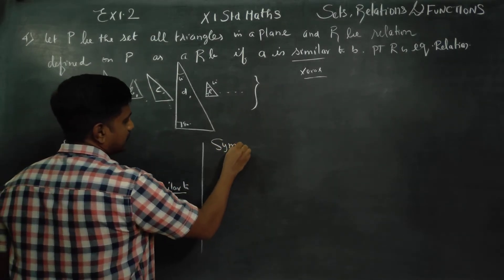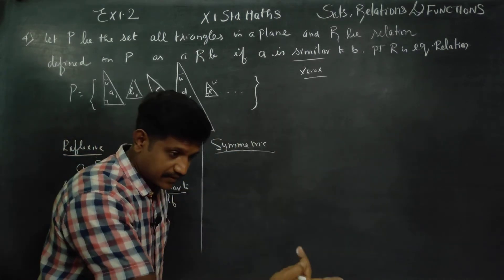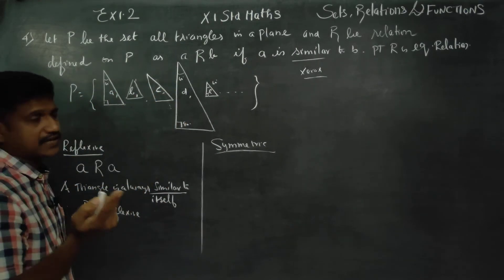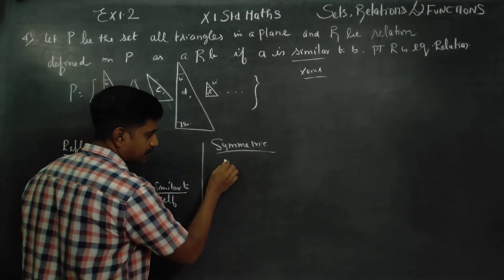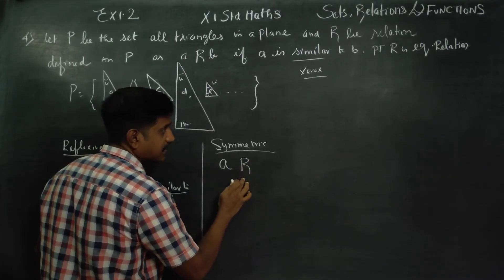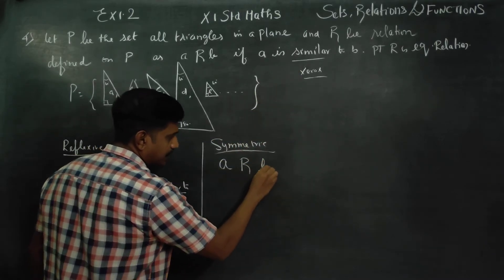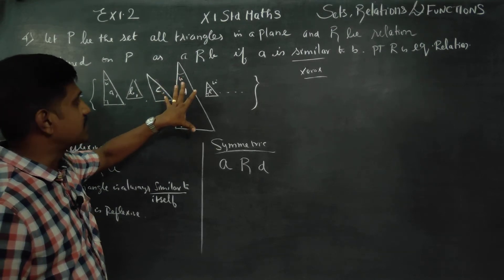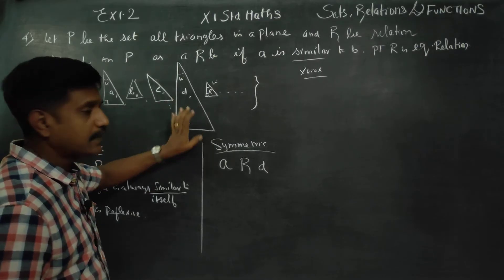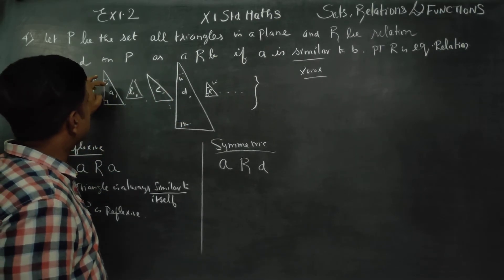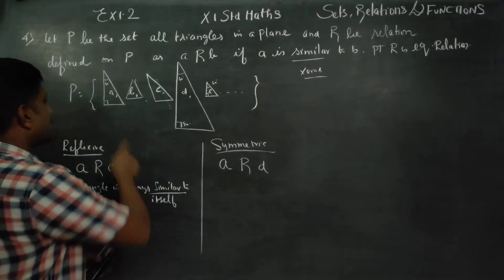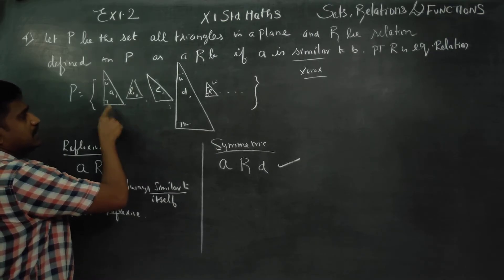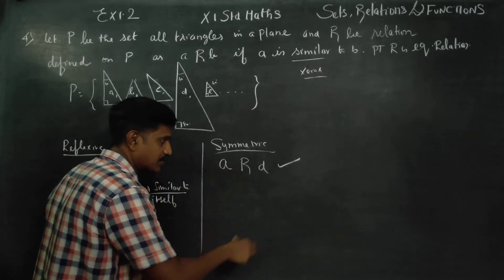That is because every triangle is always similar to itself. Therefore R is reflexive. Now, symmetric. The symmetric rule: if you have two triangles similar to each other — for example, these are similar triangles because when two angles are equal they are called similar triangles. If A is similar to B, then B is similar to A. Equiangular triangles are similar triangles.